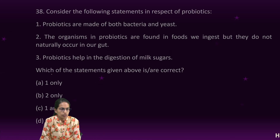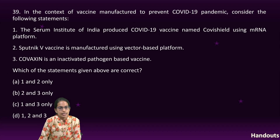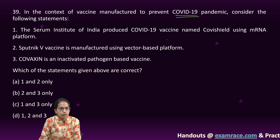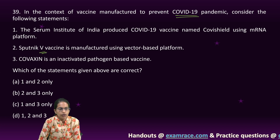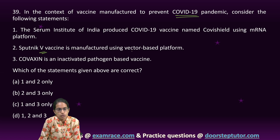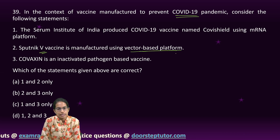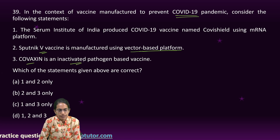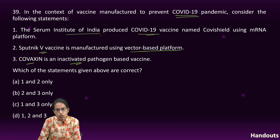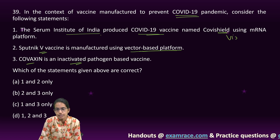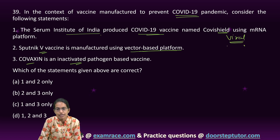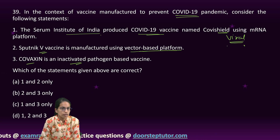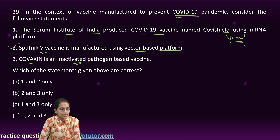The next question is on vaccines to prevent the COVID-19 pandemic. Sputnik V is based on a vector-based platform using the adenovirus group. Covaxin is inactivated, similar to the polio vaccine. The Serum Institute of India produced Covishield using viral vector technology, not mRNA technology. mRNA technology has been used by Pune-based Gennova Pharmaceuticals. So two and three are the right options.